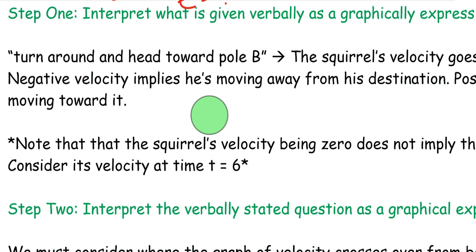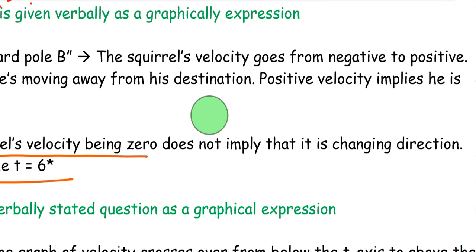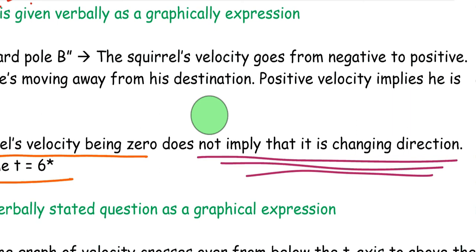So note that the squirrel's velocity being zero does not imply that it is changing direction. Consider its velocity at time t equals 6. Just because the squirrel's velocity becomes zero does not imply that it changes direction. Now, you might be thinking, wait a minute. Doesn't it, when it goes from negative to positive, equal zero? Yes.